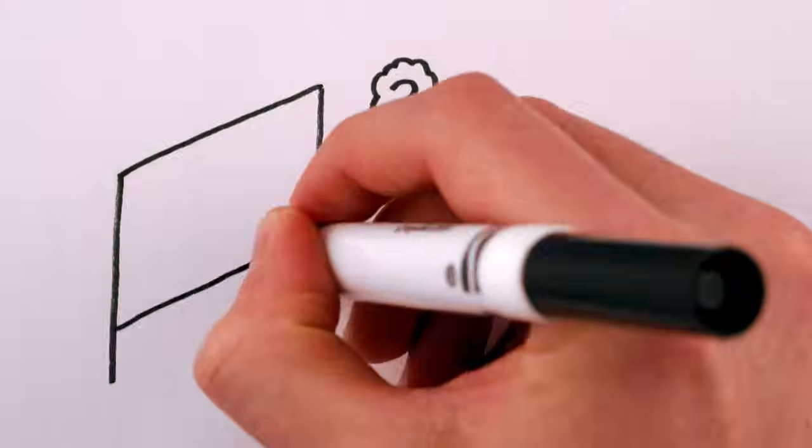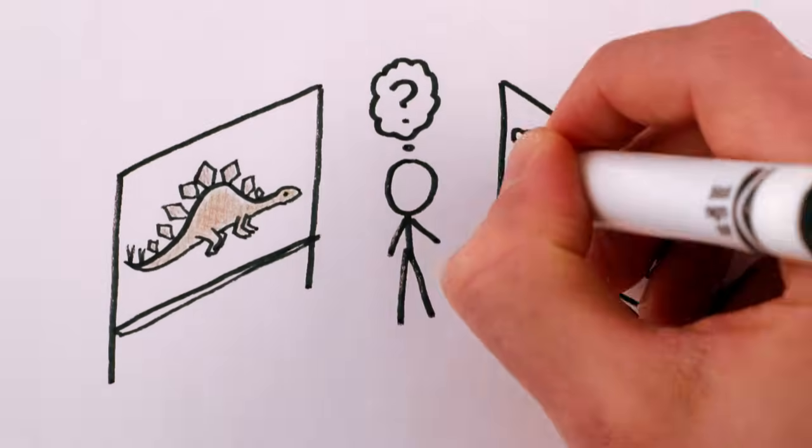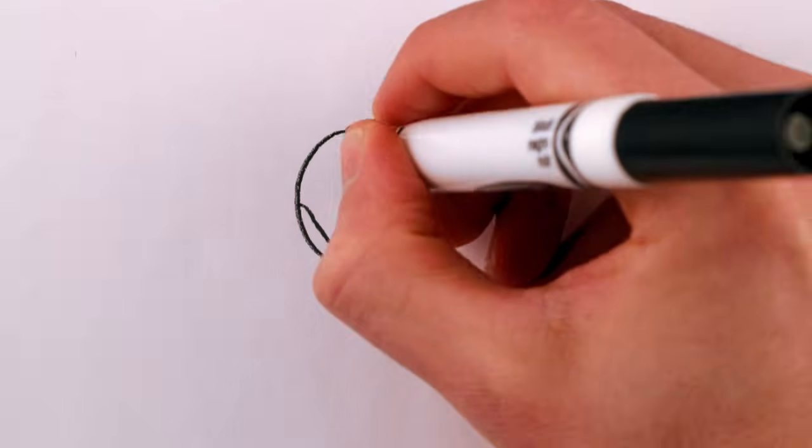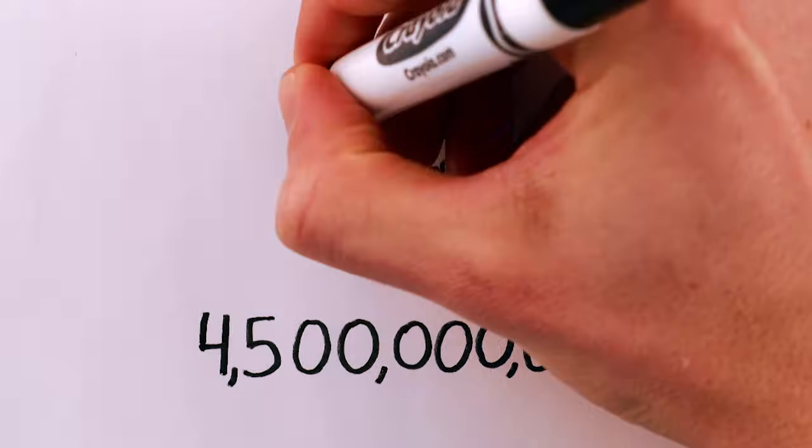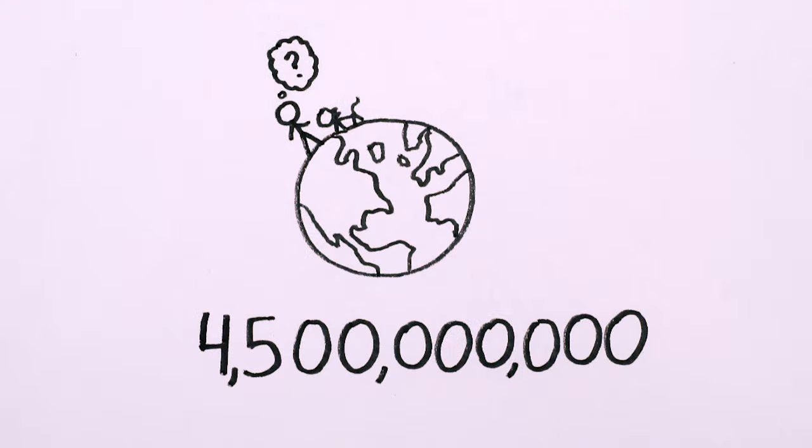But how do we know this stuff? How do we know what happened on Earth before the records of written history? Why do we think the Earth is 4.5 billion years old? And what on Earth is going to happen in the next 45 years?